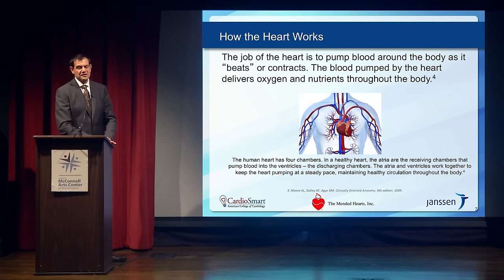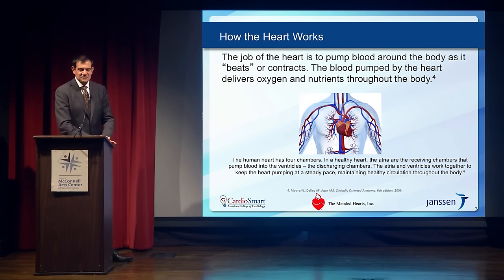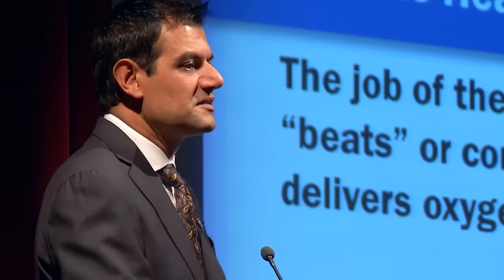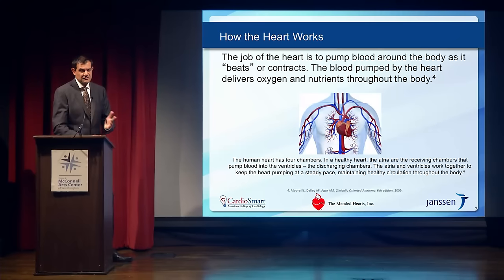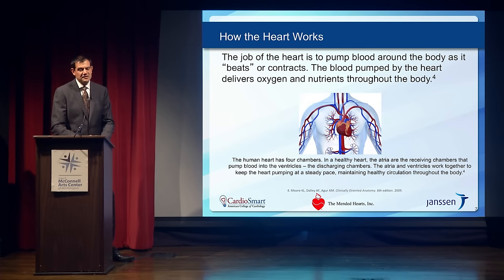If the electrical system becomes diseased, we can have extra signals, delayed signals, or crisscrossed signals. One important way those signals get crisscrossed is when they start in the top chamber — the atrium — and instead of coming in a regular beat, they become erratic. We call that fibrillation. When it starts in the top of the heart, we call it atrial fibrillation — that's where the name comes from.